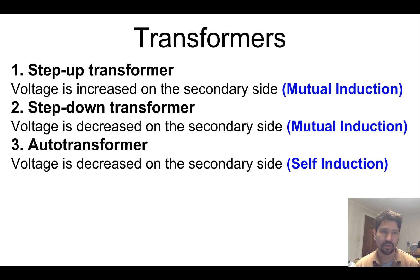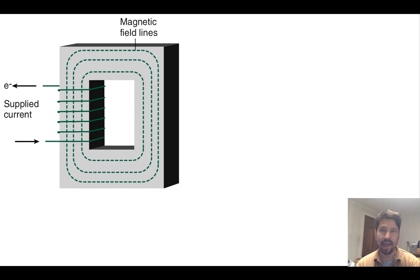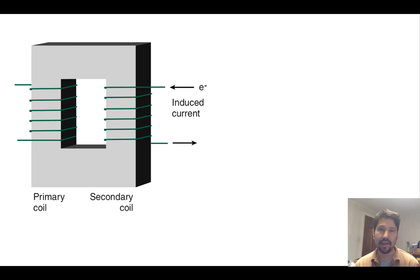The step-up and step-down transformers operate on mutual induction while the auto transformer operates on self induction. If we had an electric current wrapped around a magnet, an iron core, we would generate a magnetic field in that core. And if we wrapped another wire around the other side we would induce a current on that.